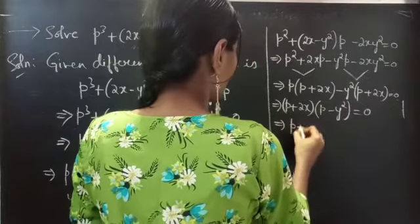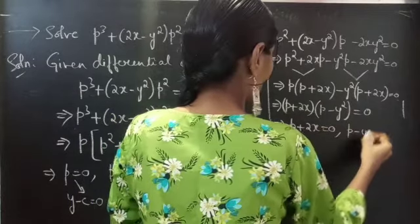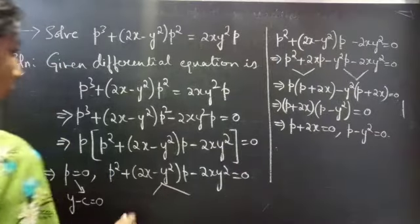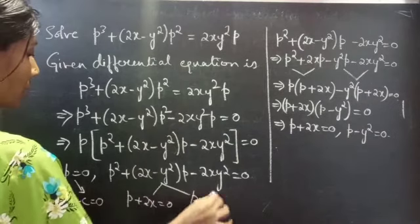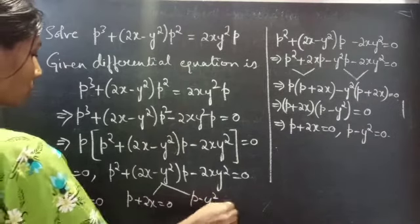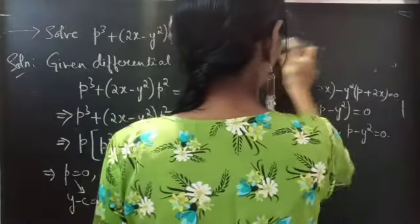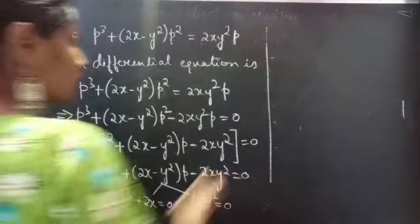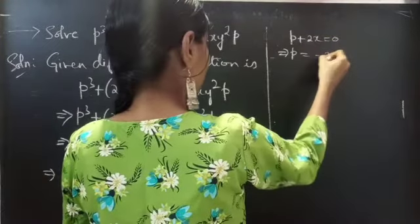From this factorization we get two equations: P plus 2X equals to 0, and P minus Y square equals to 0. Let's find the solution for P plus 2X equals to 0. This can be written as P equals to minus 2X.